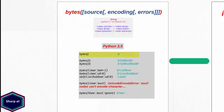If you call bytes without any argument it returns an empty bytes object. If you call bytes with an integer as an argument it returns that many bytes, each set to 0. If you call bytes with a string object, the encoding argument is compulsory. The encoding argument defines how each byte in the bytes object will be encoded — setting encoding to latin1 gives a different output than utf8, especially when you have non-ASCII characters.